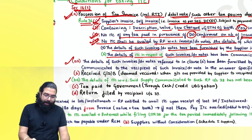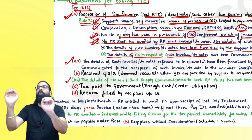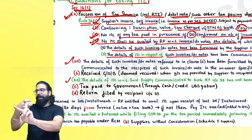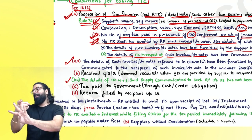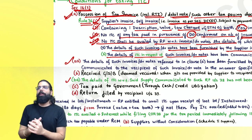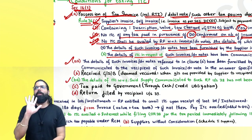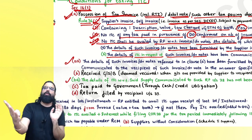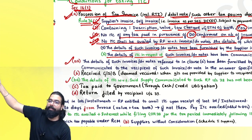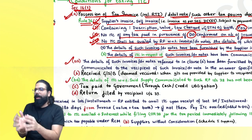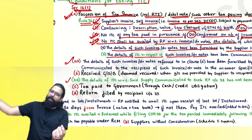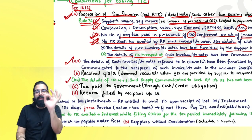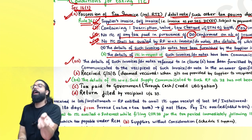Recap of conditions: Possession of tax paying document — Rule 36 says BIRDS, and the document must have description, quantity, value (DQV), GSTN, and place of supply. Third: if any tax was paid due to fraud, willful misstatement, or suppression, neither party gets credit. Fourth: supplier should show invoice in GSTR-1, it should appear in your GSTR-2B — only then can you take the credit.